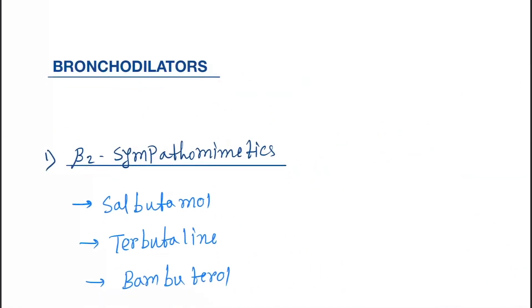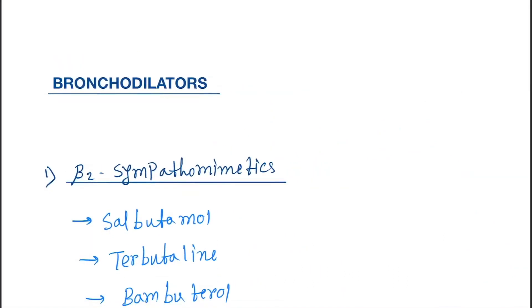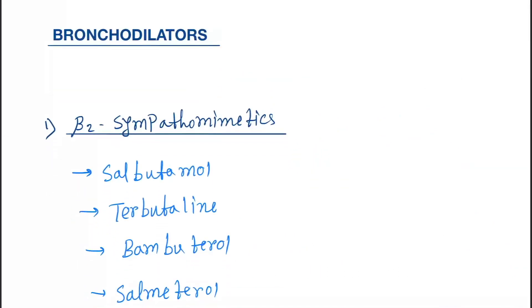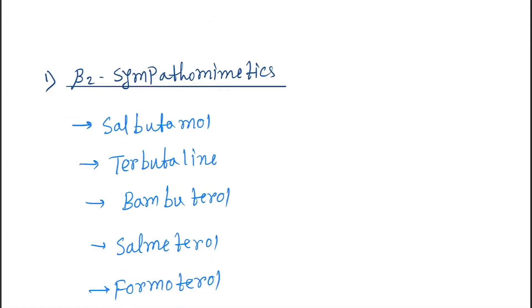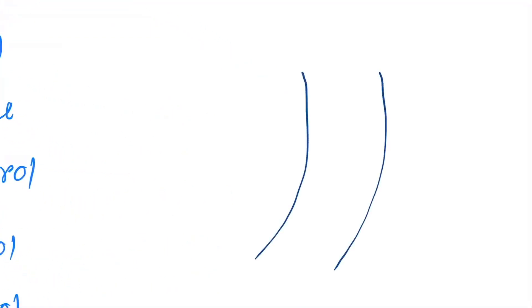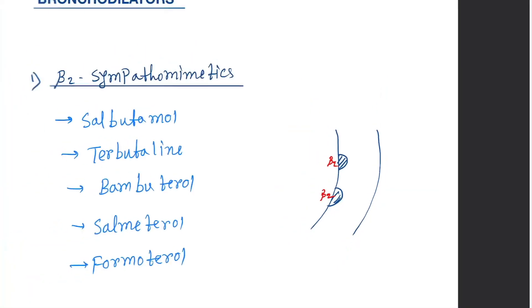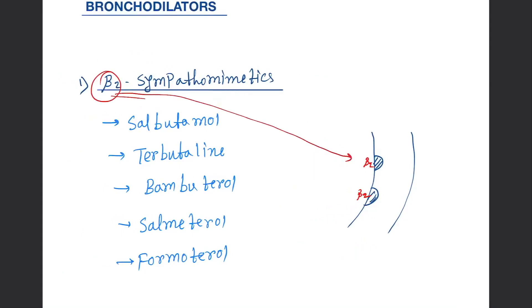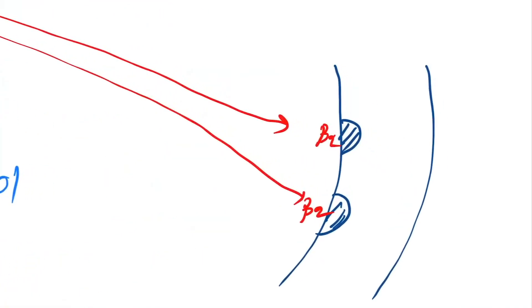Now let's discuss the drugs one by one with detailed mechanisms of action. The first one is beta-2 sympathomimetics. Beta-2 sympathomimetics act on the bronchial smooth muscles. Suppose this is a bronchial smooth muscle — here are the beta-2 receptors. Beta-2 agonists directly act on those beta-2 receptors, and as a result, bronchodilation will occur.